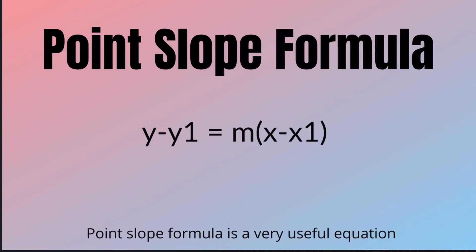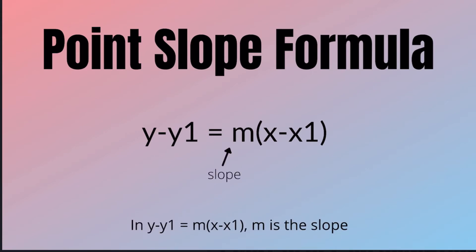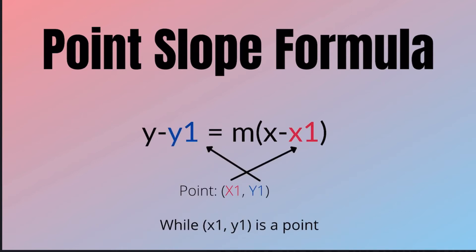Point slope formula is a very useful equation. Find a point and the slope without hesitation. In y minus y1 equals m times x minus x1, m is the slope while x1, y1 is a point.